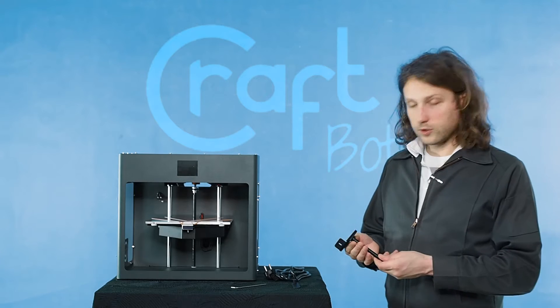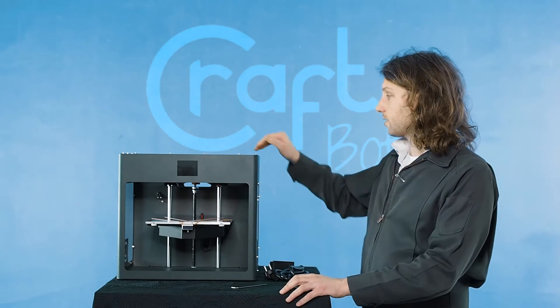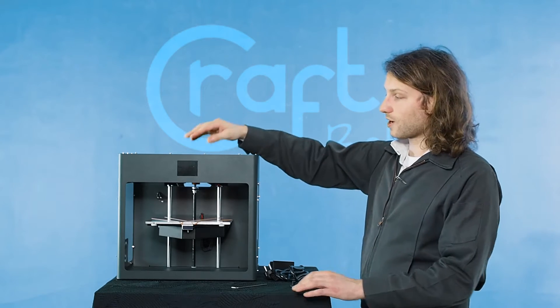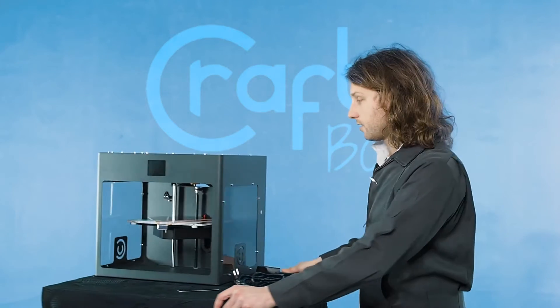Let's attach the filament holder and the filament guide tube holder. You can attach it anywhere along the side of the machine or the back. I wouldn't recommend putting it in the front because your LCD is here. I'm just going to put it right here on the side.